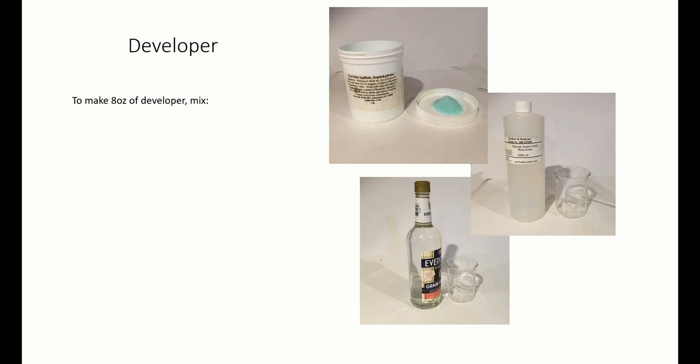The developer. To make 8 ounces of developer, pour 175 milliliters of distilled water into a 250 milliliter beaker. Add 7.5 grams of ferrous sulfate, 7 milliliters of acetic acid, glacial, and 9 milliliters of ethyl alcohol.